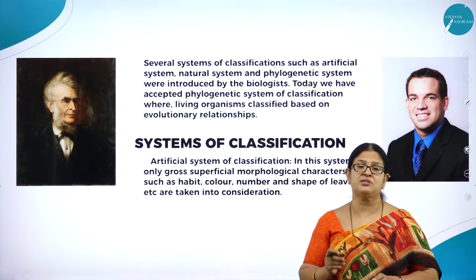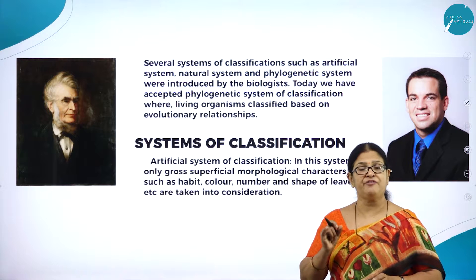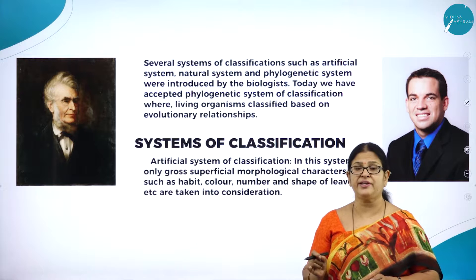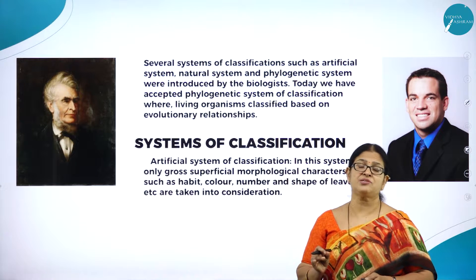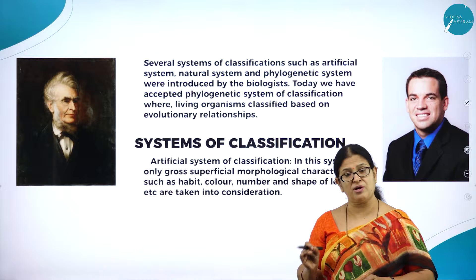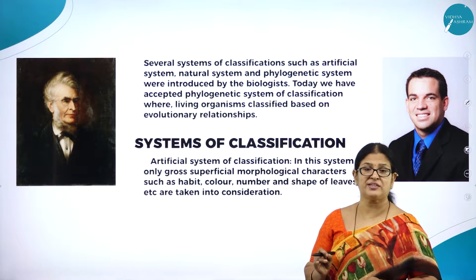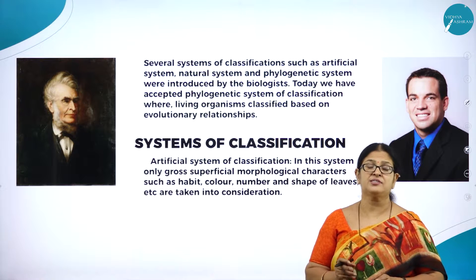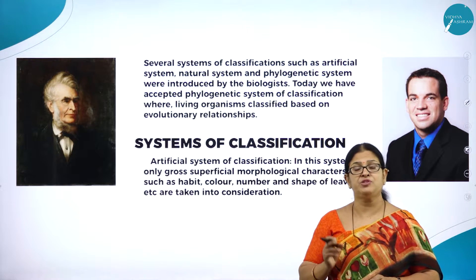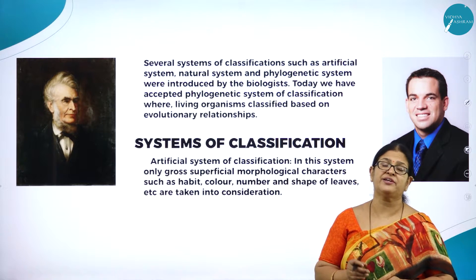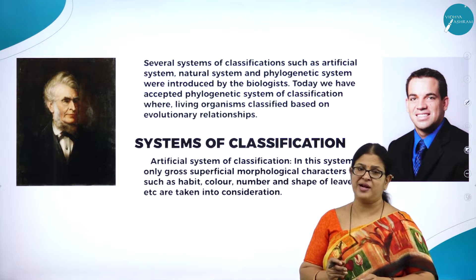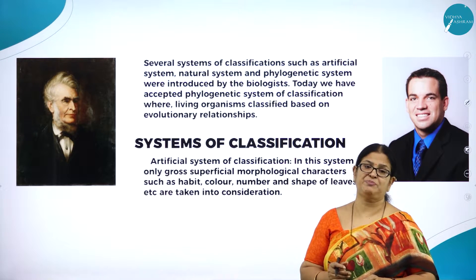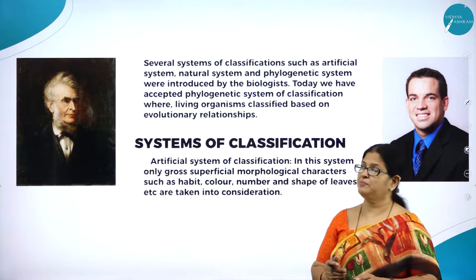Do you think all three systems of classification are followed? No. The artificial system of classification is not followed because it does not satisfy many criteria. Even the natural system of classification is not followed. The only system we are following right now is the phylogenetic system of classification, put forward by two great biologists, Engler and Prantl. Let us study this important and interesting chapter: Plant Kingdom.